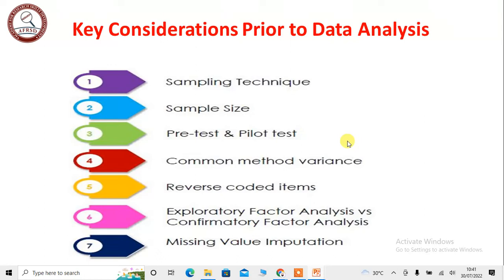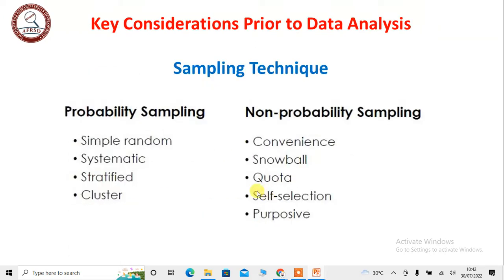I have covered in my step-by-step thesis writing all the details: pre-test and pilot test, common method variance, reverse coded items, exploratory factor analysis versus confirmatory factor analysis, missing value imputation — all of these I have discussed in my step-by-step thesis writings.